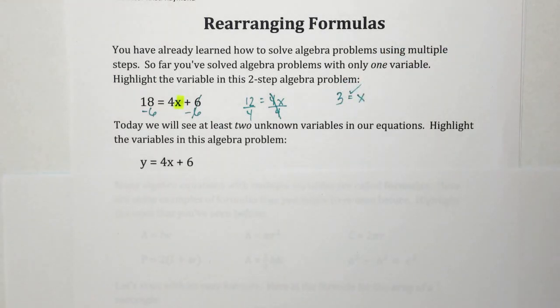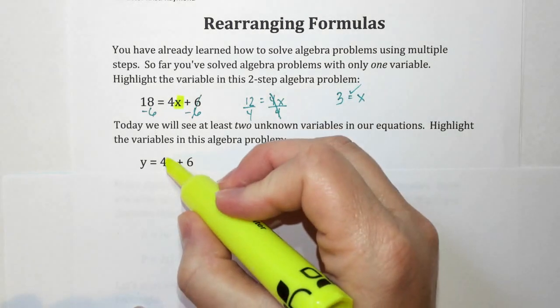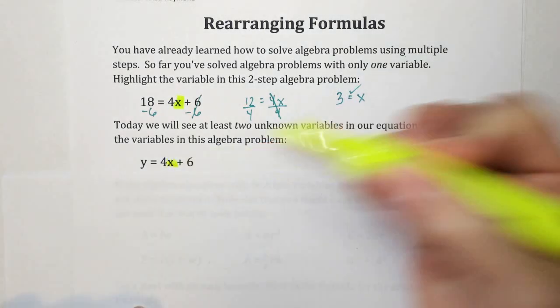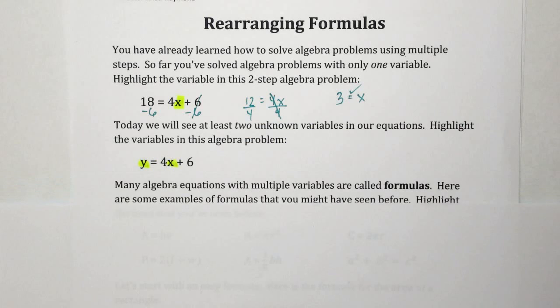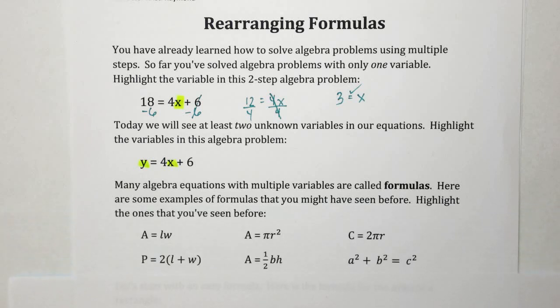Now today we're going to see at least two unknown variables in our equations. So highlight both of the variables in this algebra problem. You already said x was an unknown. How about the y? So that's something new for us. Many algebra equations with multiple variables are called formulas. Here are some examples of formulas that you might have seen before. Highlight any of these that you've seen before. It's okay if you haven't seen any of these geometry formulas. Let's just see if we can activate some of our prior knowledge here.